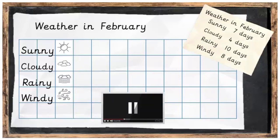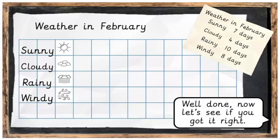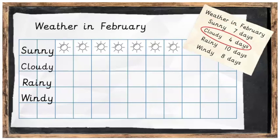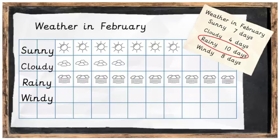Now it's time for you to complete your pictogram. You can complete it by yourself or you can pause the video each time and copy what I've done. Press play when you're ready. Well done — let's see if you got it right. It was sunny on seven days, so there are seven icons across from sunny. After that we put in cloudy for four days, then rainy for ten days, and windy for eight days.